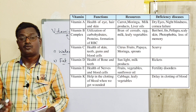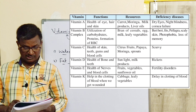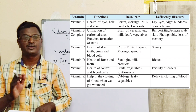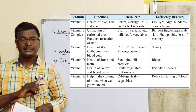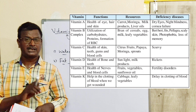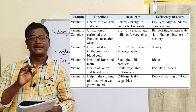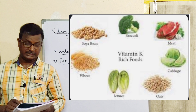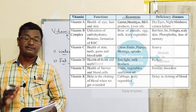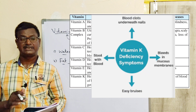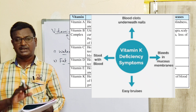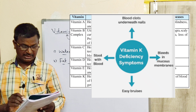Vitamin K. Functions: it helps in clotting of blood when we get wounded. When we are wounded and blood comes out, blood clotting is the main function of vitamin K. Without vitamin K, blood cannot clot. Sources: cabbage and leafy vegetables. Deficiency of vitamin K causes delay in clotting of blood. Remember: clotting = K.